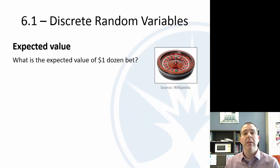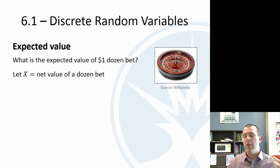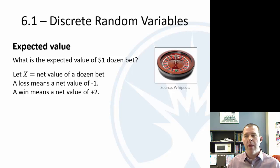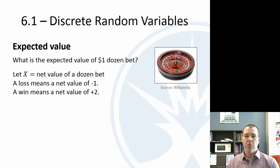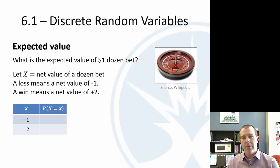If the payout is two to one — so you get your original money back plus double that — what's the expected value of a one-dollar dozen bet? We're going to answer this using the mean of a random variable. First we define x as the net value, the profit or loss of a dozen bet. There are only two possibilities: if you lose, you've lost your dollar, so the net value is negative one. If you win, you get back your dollar plus twice that — so you net two dollars.